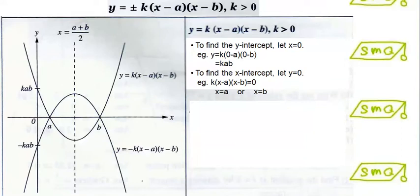For this equation, the way to find the y-intercept and the x-intercept is the same. To find the y-intercept, we let x equal to 0 and we will get y equal to kab. To find the x-intercept, we let y equal to 0 and we will get x equal to a or x equal to b.